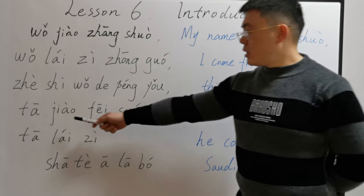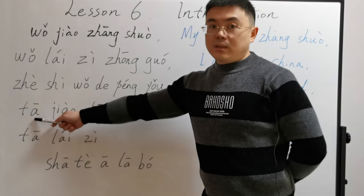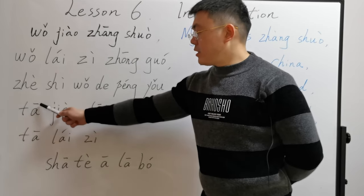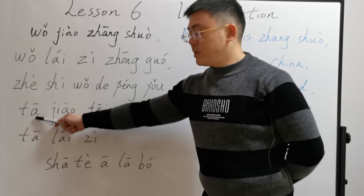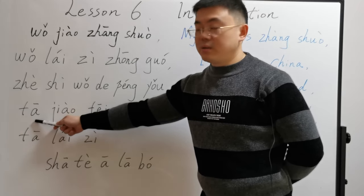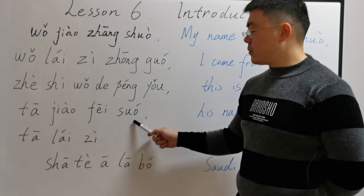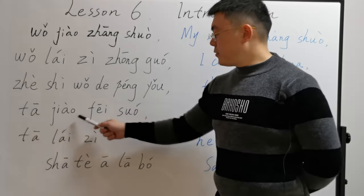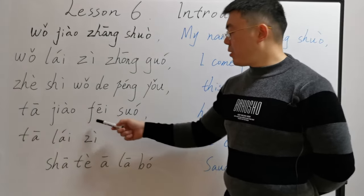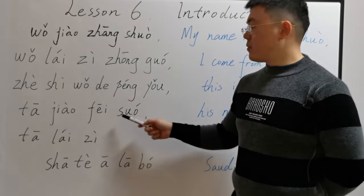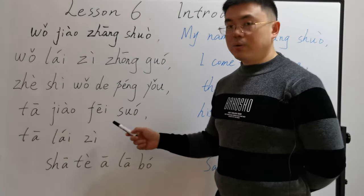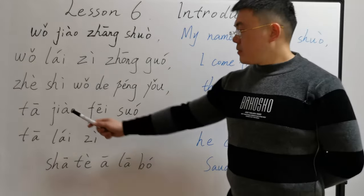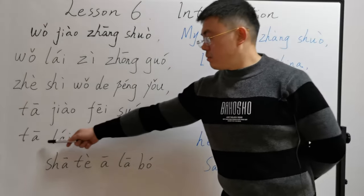Next: 他. 他 has an initial and final, and the first tone. 他 means he or him. 他叫菲索 — 叫 means called. 他叫菲索 means you can call him 菲索, or his name is 菲索.